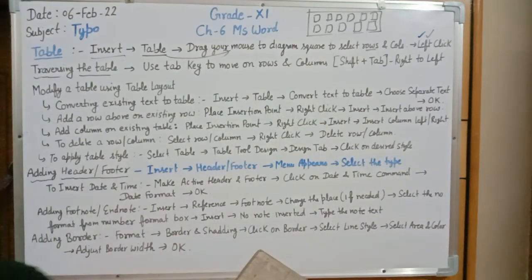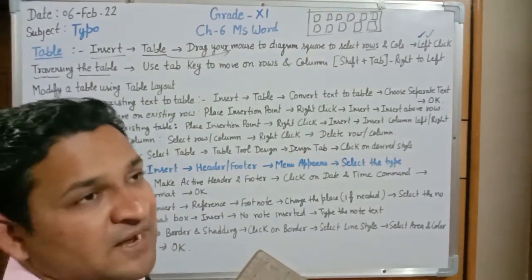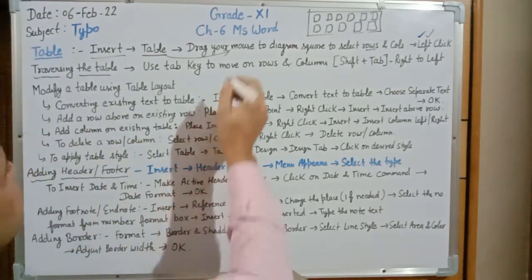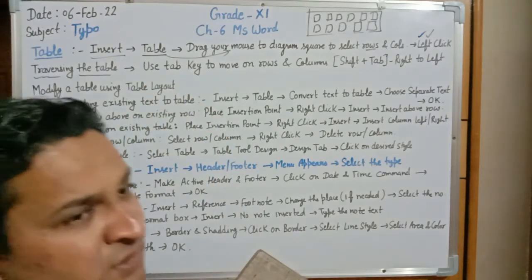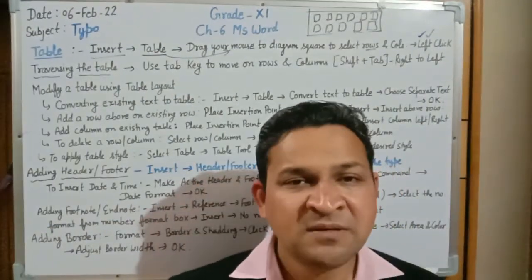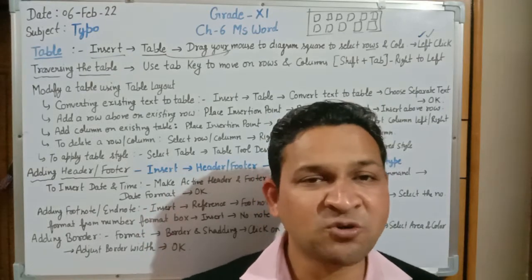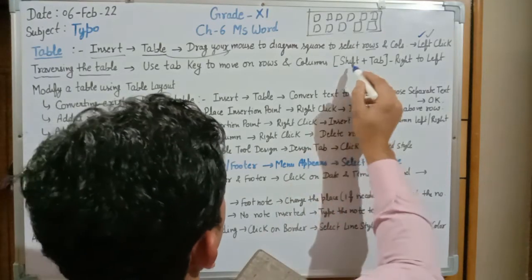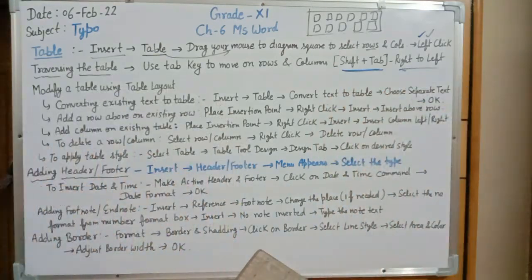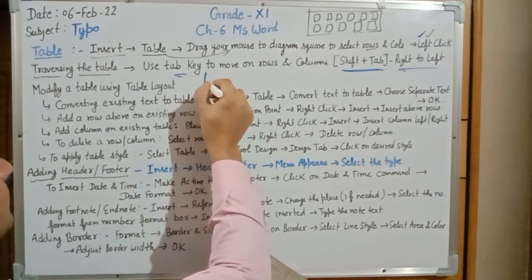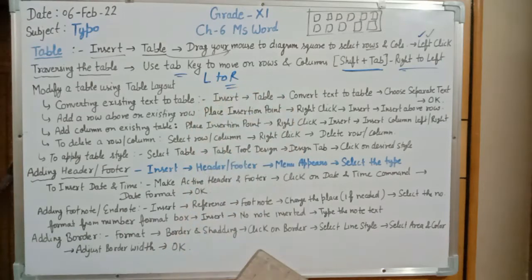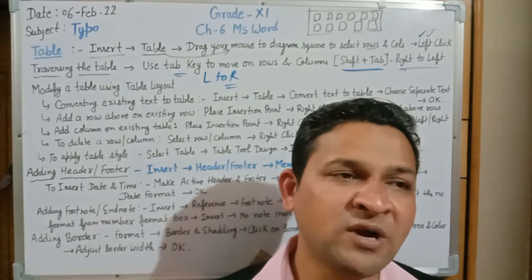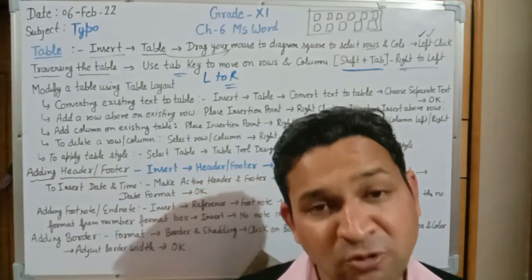To traverse the table — meaning to move to a specific entry in a specific row or column — we use the shortcut key Tab. Using the Tab key we can move to any row and column continuously. Pressing Tab moves to the next column in a continuous left-to-right order. Pressing Shift+Tab moves in the backward direction, that is right to left.